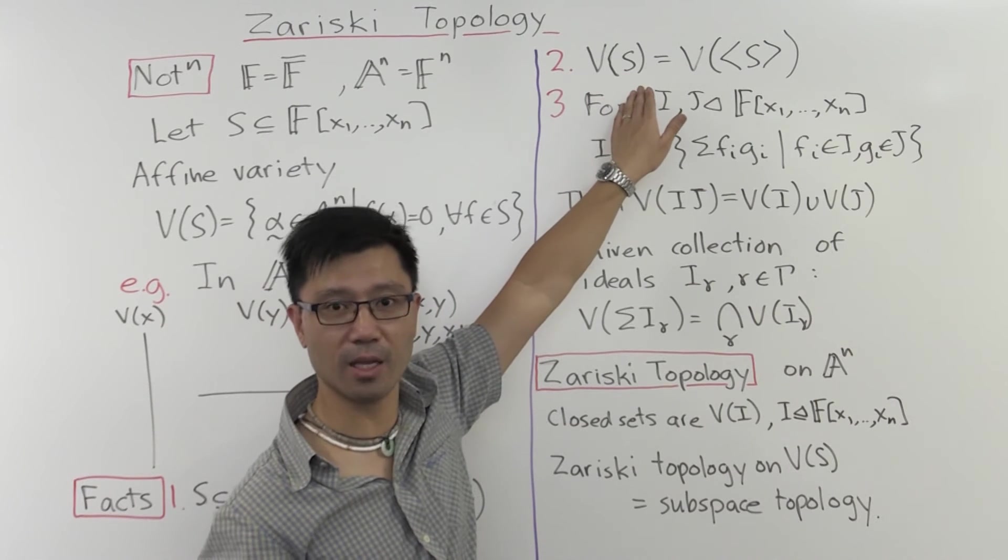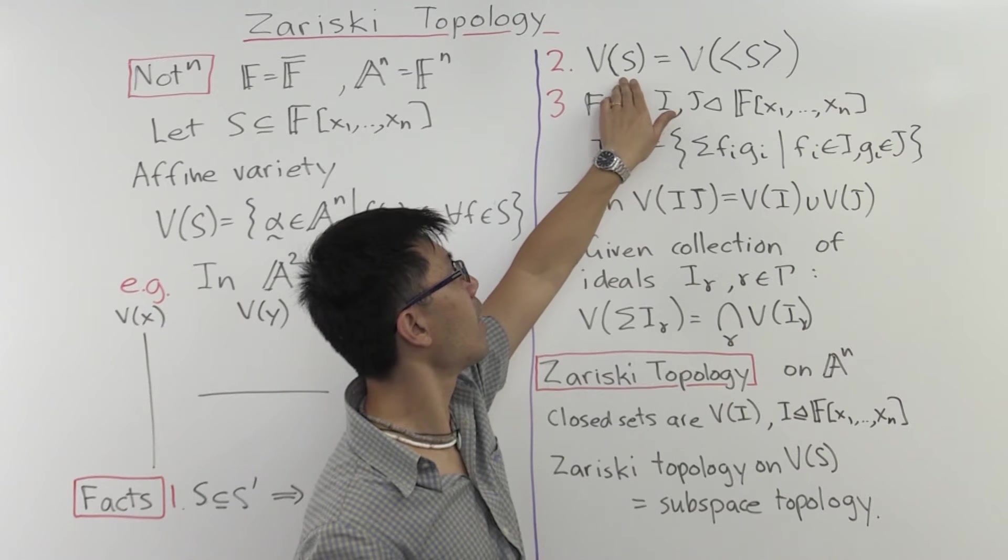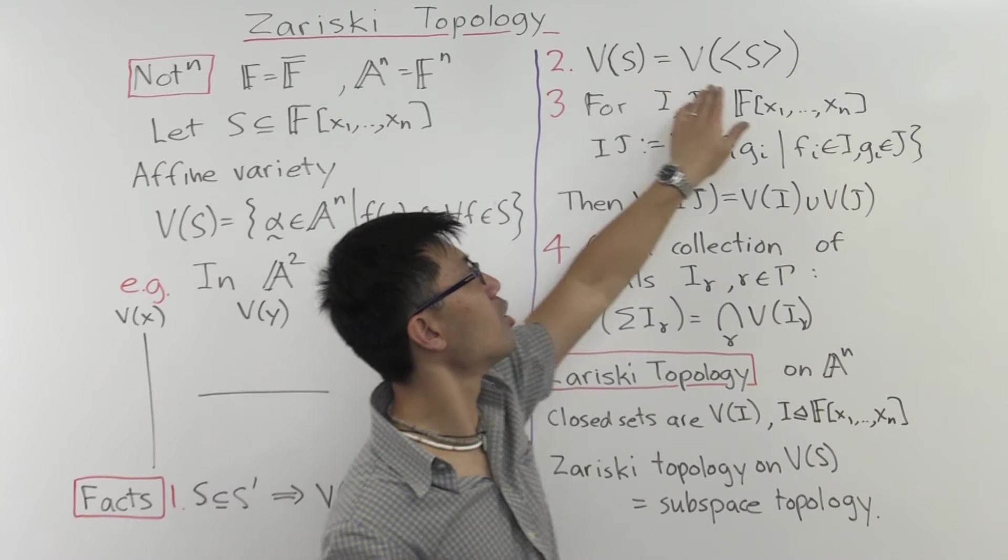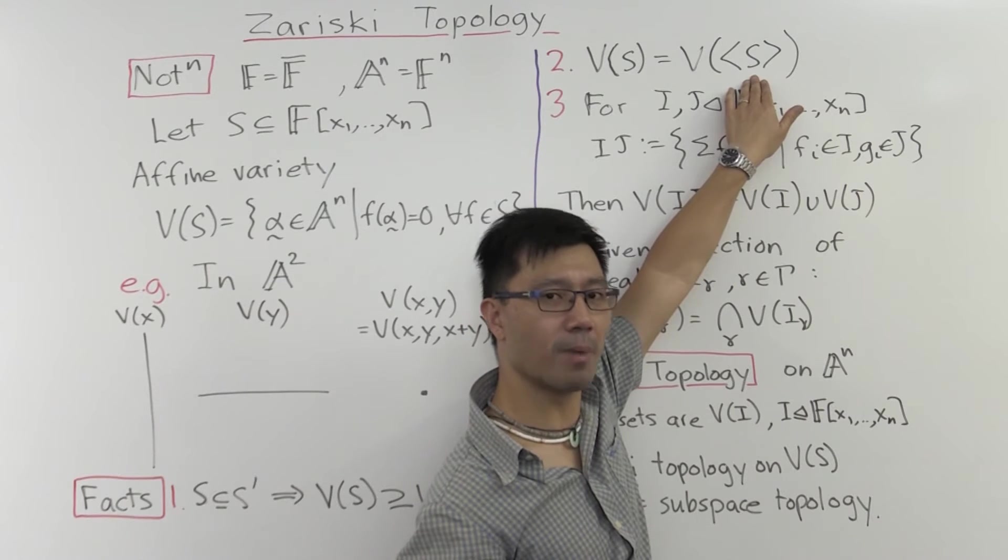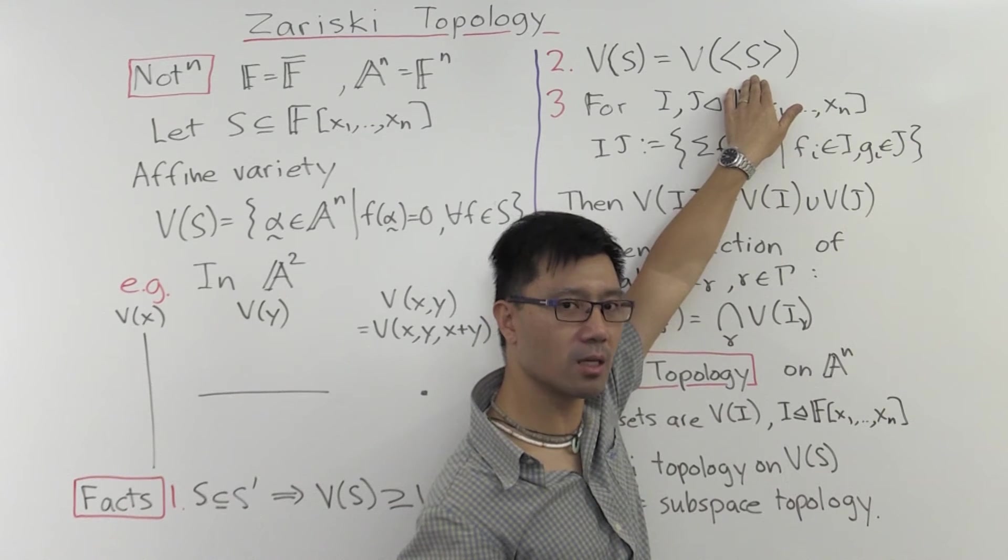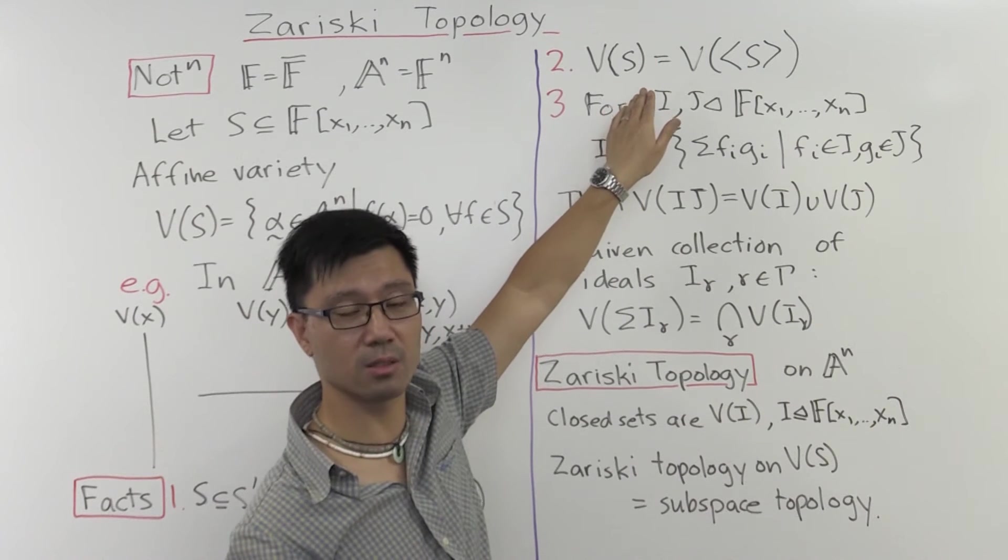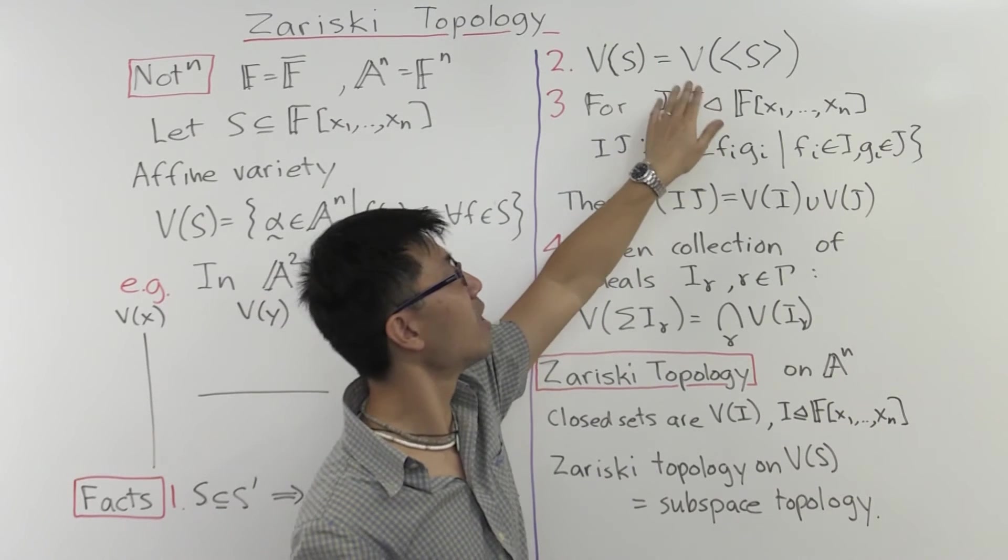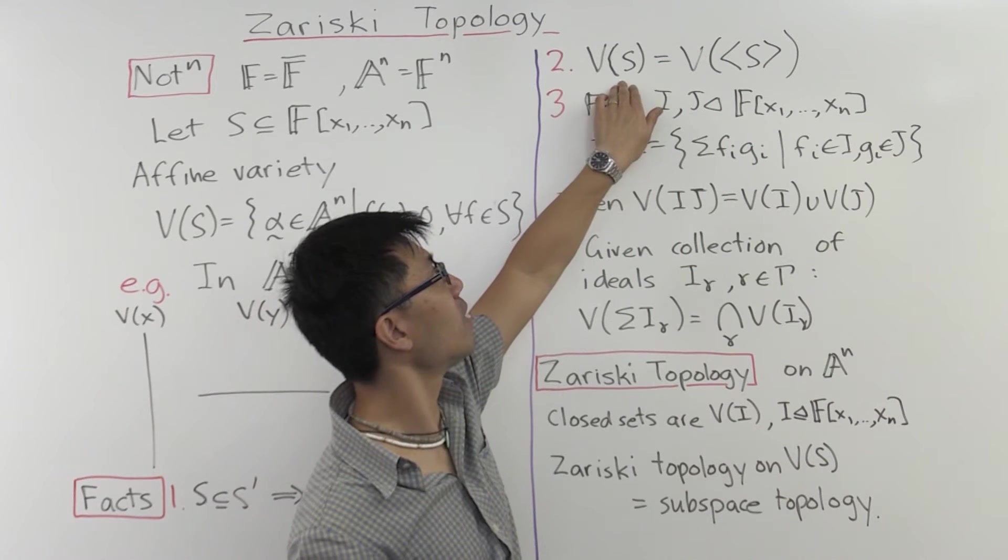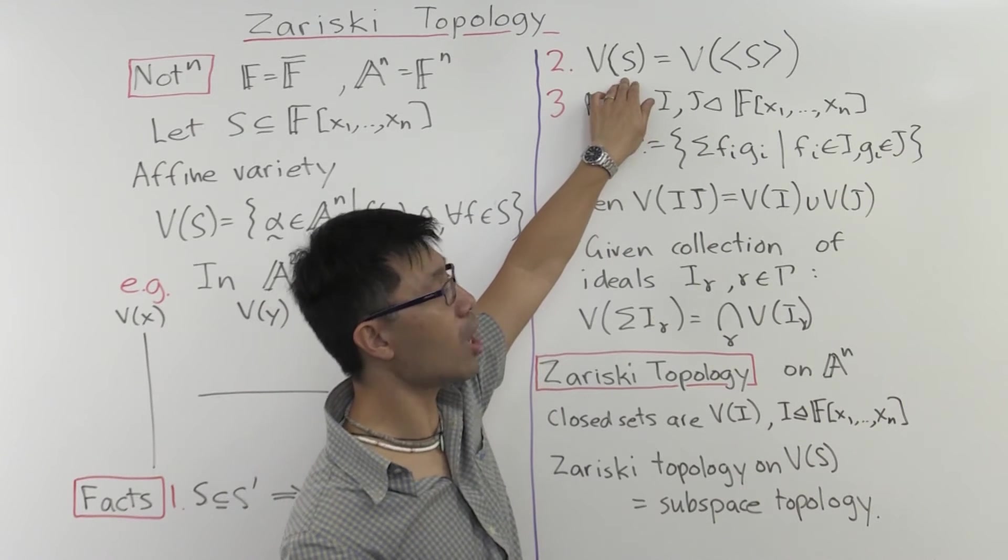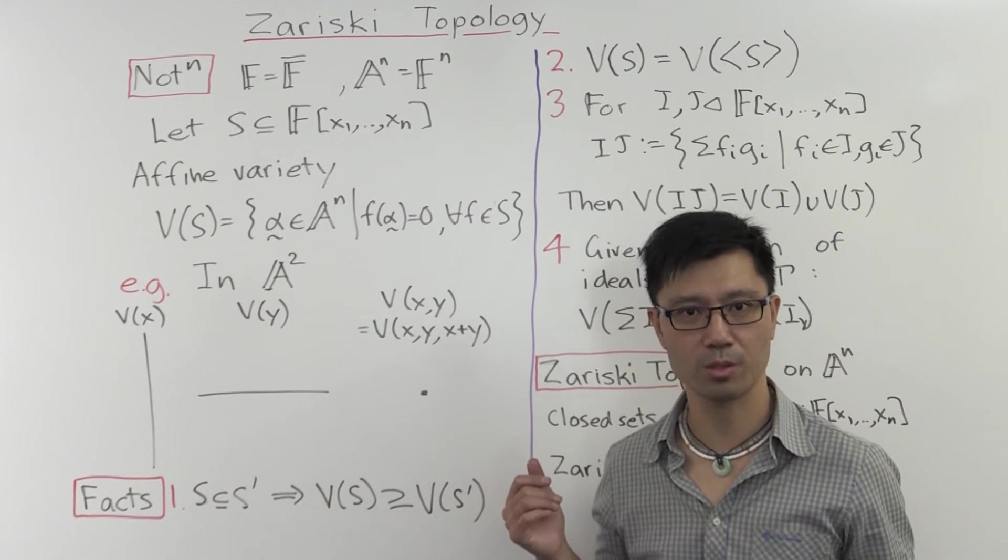So this set S, then, you can replace it with its ideal, which is infinite. But Hilbert's Basis theorem says that any ideal in the polynomial ring can be generated by a finite number of elements. So actually, this variety, even though it's the zeros of an infinite number of polynomials, you can re-express it as the zeros of a finite number of polynomials.